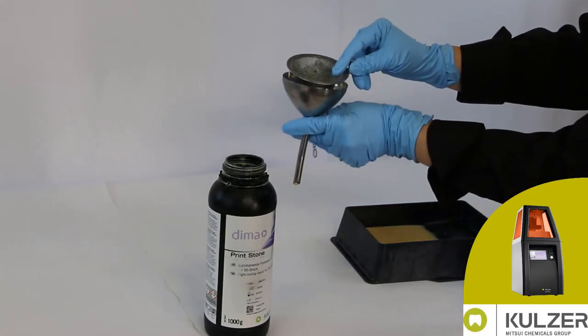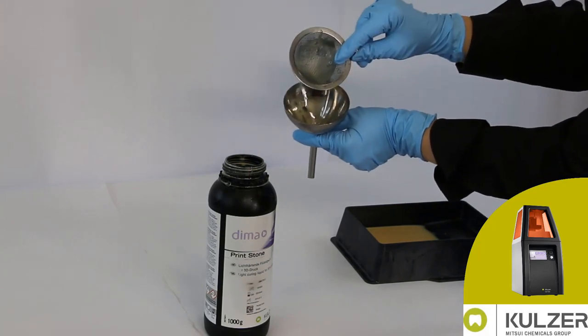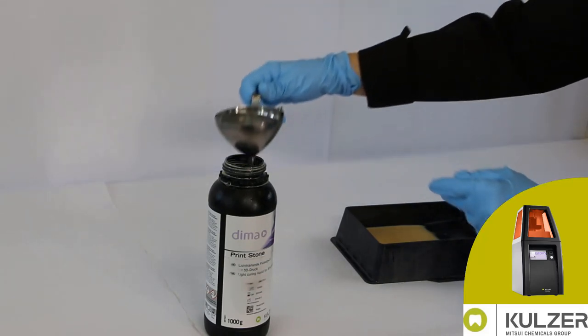During printing, it is important to filter the photopolymer when filling it back. Insert the steel funnel with the attached strainer into the bottle.